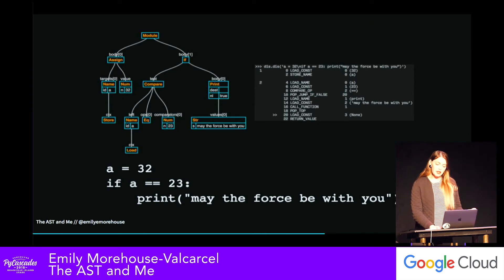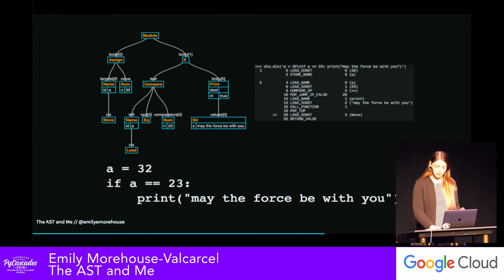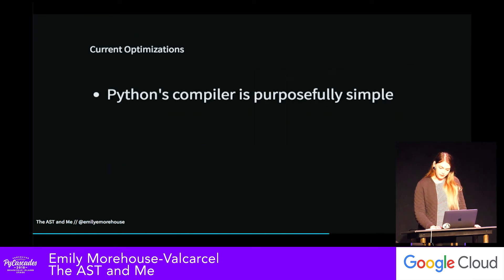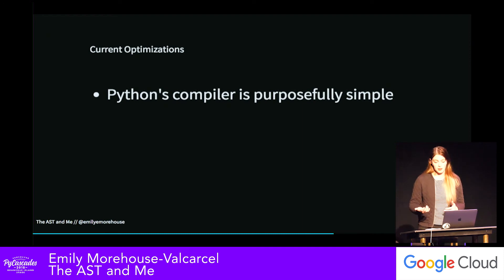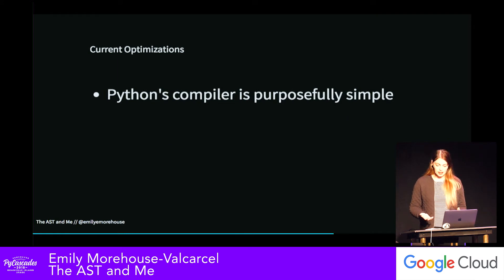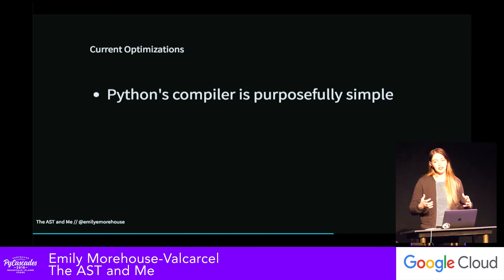Something very important to note is that what we wind up with in our AST or bytecode is not necessarily going to match our source code one-to-one. There are certain shortcuts our compiler takes when it creates bytecode. Python's compiler is purposely very simple. The best way to optimize Python is to actually switch out your interpreter entirely — that's why things like PyPy, Jython, and Cython exist. The Python language can be completely independent of the implementation used to bring it to life.